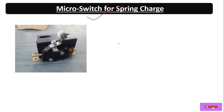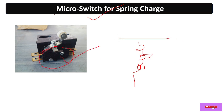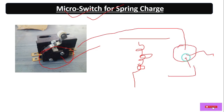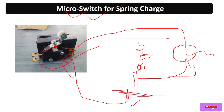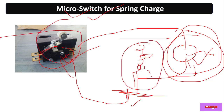The micro switch for spring charge works together with the motor. Suppose the spring is uncharged — in that condition, through the auxiliary contact of this micro switch, the universal motor runs. When the spring reaches the fully charged position, this micro switch will activate and stop the motor. So the motor is integrated with the micro switch based on the spring tension.